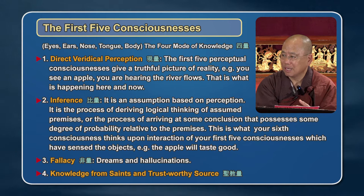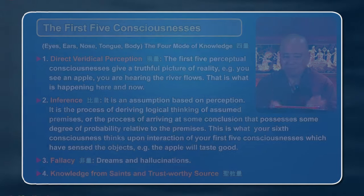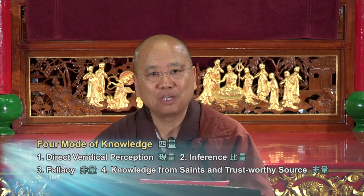Next time someone asks, 'Why do you believe in Buddhism? Have you seen the Buddha?' and they say, 'I only believe in things I actually see,' that's wrong. You believe in things in four ways and no other ways: veridical perception, inference by logical thinking of assumed premises and probability, fallacy, and knowledge from trustworthy sources. You see Mr. Chan — that's direct veridical perception. Then the second thought arises: 'Oh, that's Chan, I know him.' There's already an assumption. And then: 'He looks tired' — you've already passed your evaluation. The inference arises on the second thought.